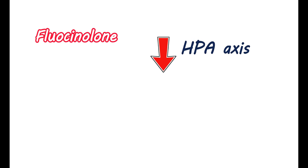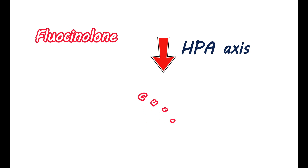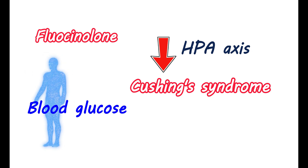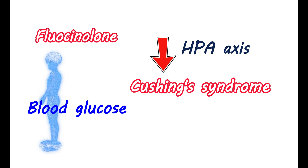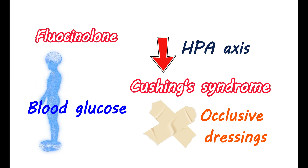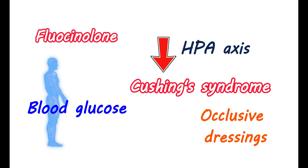Overuse of this medication may result in suppression of the HPA axis. When used for periods greater than two weeks, there is a chance of developing HPA axis suppression. This can produce symptoms resembling Cushing's syndrome, including elevated blood glucose levels, glucose excretion in urine, and unequal fat distribution resulting in a round face. This risk is increased if applied to larger surface areas or used for prolonged periods. Use of occlusive dressings can also increase systemic absorption; however, your doctor may suggest occlusive dressings when treating psoriasis.